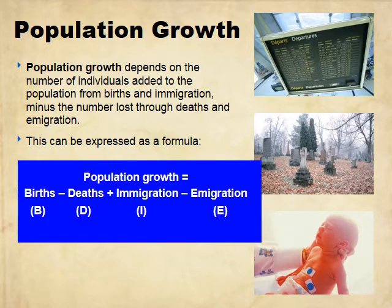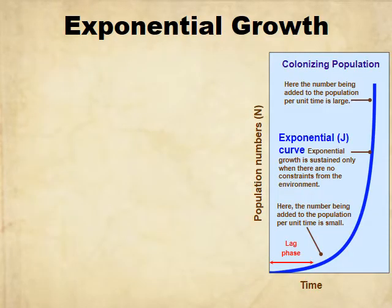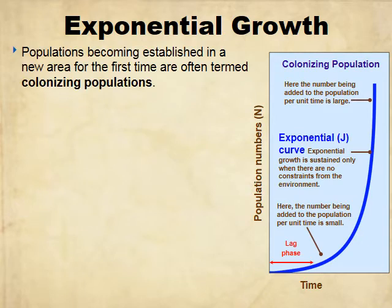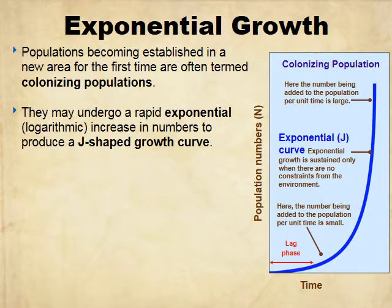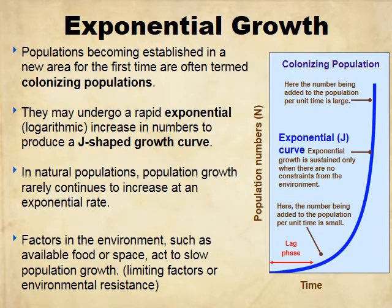There are multiple ways to rearrange this formula, so if you see it written differently, it's not wrong — it's just rearranged like math equations. Exponential growth is often used by colonizing populations; they grow very, very quickly. We call that a J-curve because it looks like a J. In natural populations, this rarely continues to increase indefinitely because something will exert pressure on it and there won't be enough resources for all those individuals.